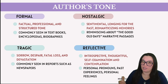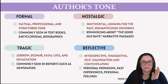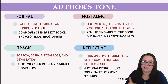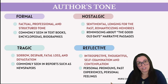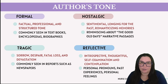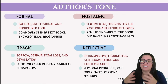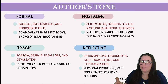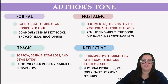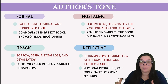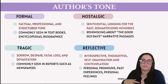In addition to positive, negative, and neutral tones, we also have formal, nostalgic, tragic, and reflective tones. Formal tone is factual, professional, and structured — seen in textbooks, encyclopedias, and biographies. Nostalgic tone is sentimental, longing for the past, romanticizing memories — you'll see reminiscing about the 'good old days.' Tragic tone involves sorrow, devastation, despair, and fatal loss — commonly seen in newspapers and news reports. Reflective tone is introspective, thoughtful, and contemplative — featuring personal pronouns like 'I' and 'me,' and discussions of past experiences and personal feelings.